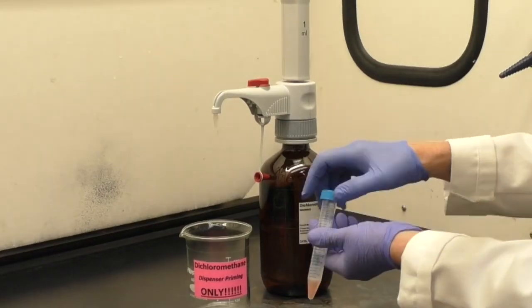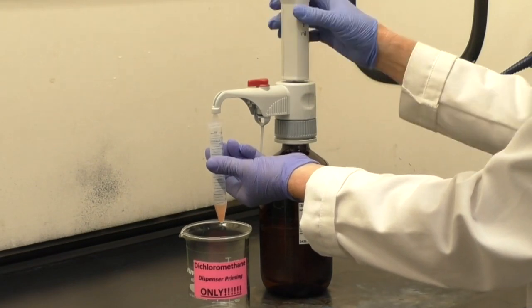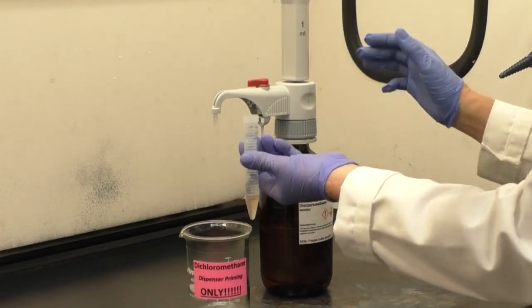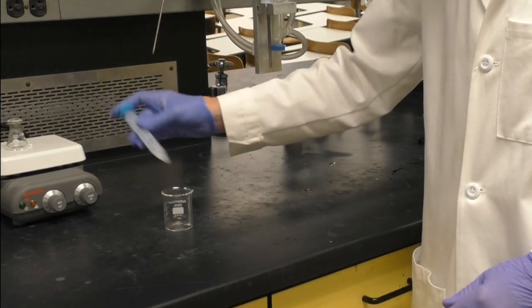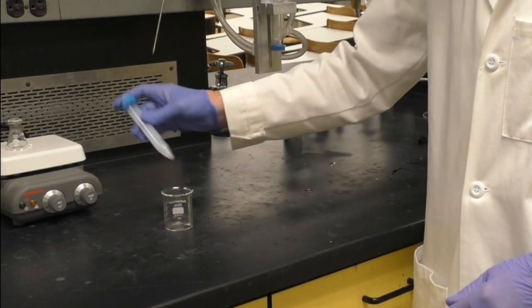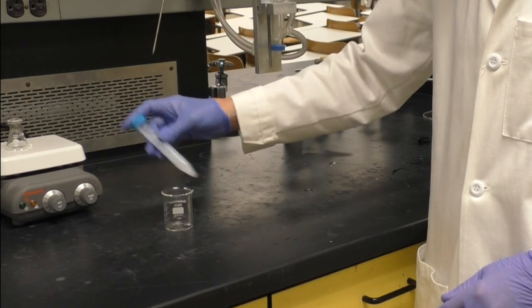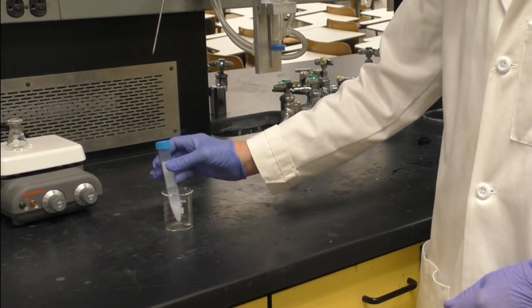Using the 1 milliliter pump, add 1 milliliter of dichloromethane to the centrifuge tube. Cap the tube tightly and shake for about 1 minute. Place the centrifuge tube into a beaker and allow the layers to separate.